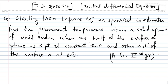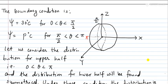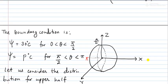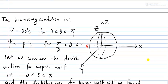Let us write the boundary conditions. According to the boundary condition, one half is at 30 degrees centigrade and the other half is at 0 degrees centigrade. Consider the sphere with x, y, and z axes. If we cut this sphere into two halves, the upper and lower halves are exactly similar. This dotted line separates the sphere into two parts — one on the right side and one on the left side.